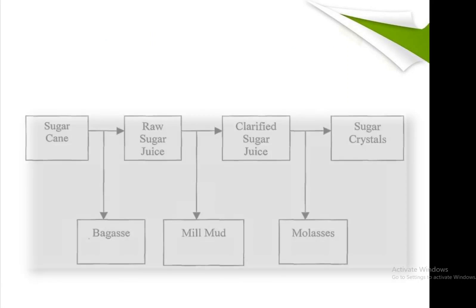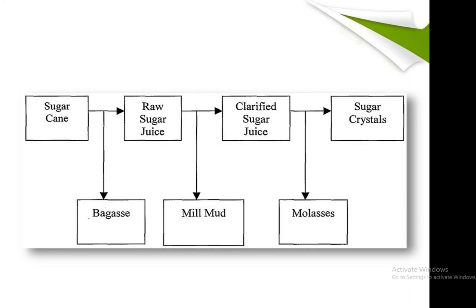This is the overall process of sugar production: sugarcane is converted into raw sugar juice, then into clarified sugar juice, and finally into sugar crystals. Bagasse, mud, and molasses are obtained as side products, each with their own applications.